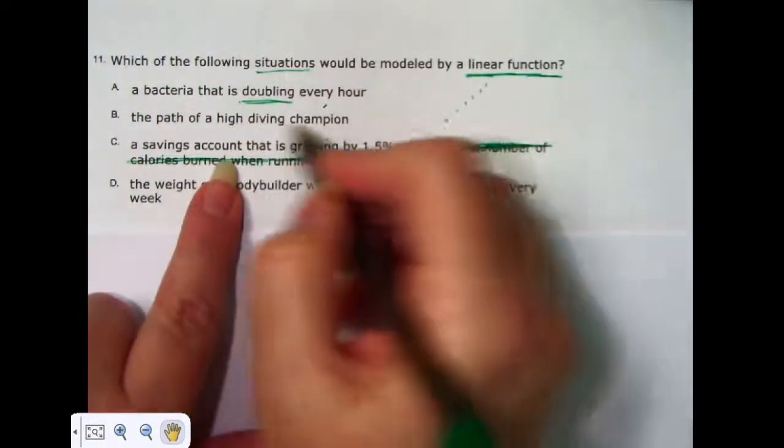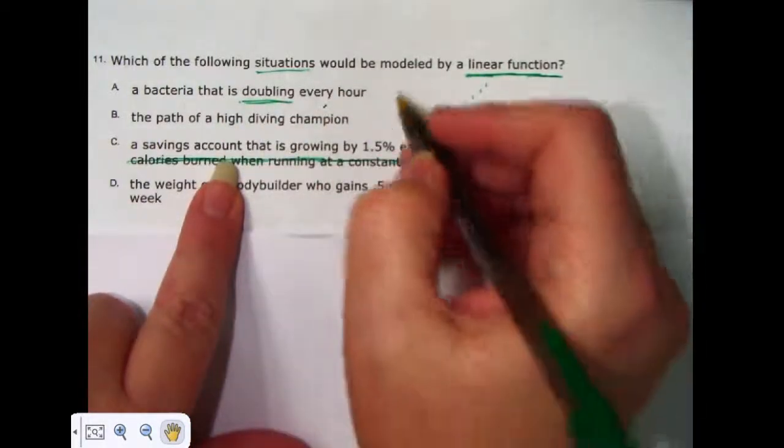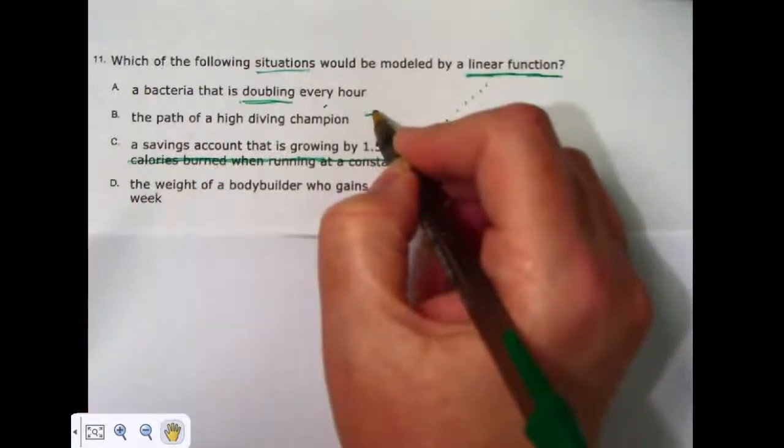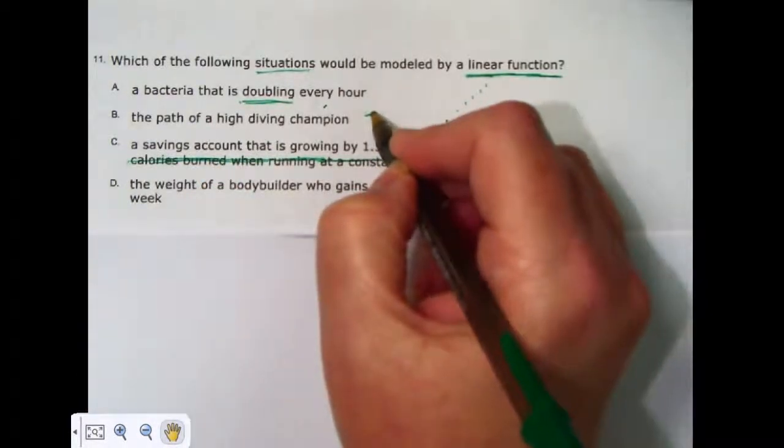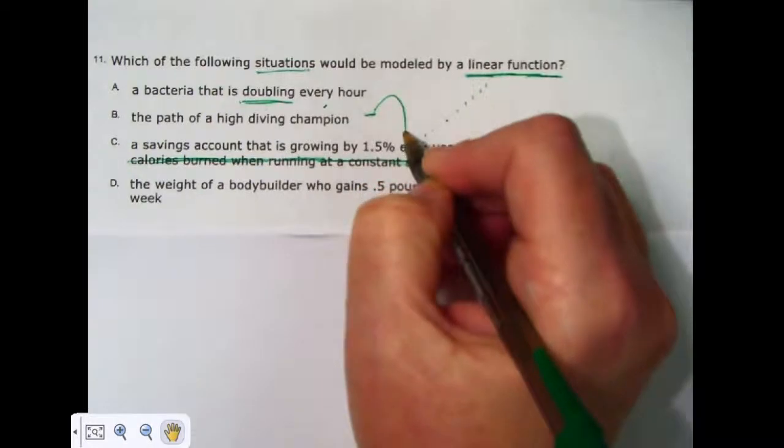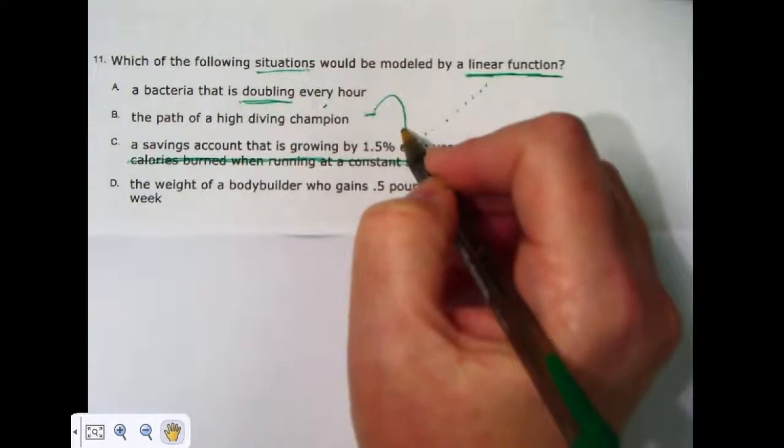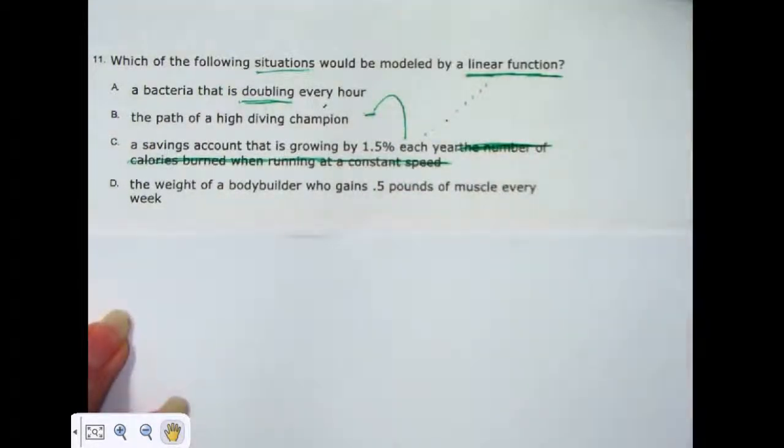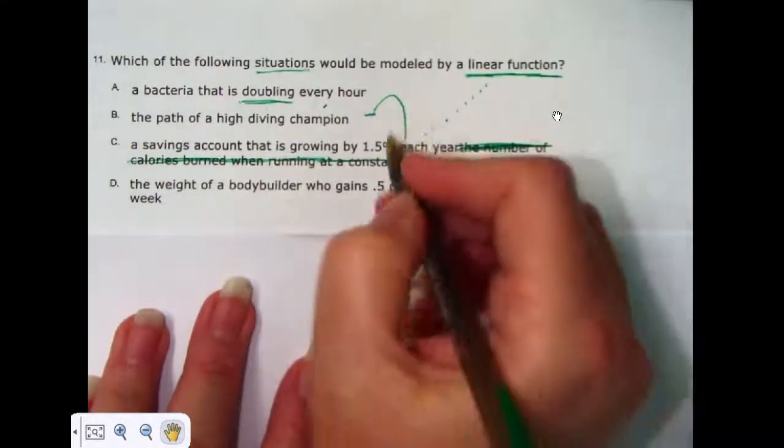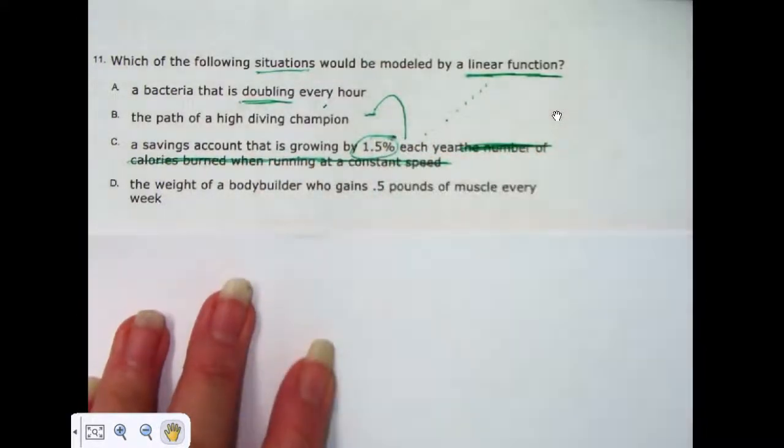When you talk about the path of a high diving champion, they jump off of the, they're at the plank, the board, the board that they jump off of, they jump up into the air and they come down. That looks like a parabola. It looks like a quadratic.